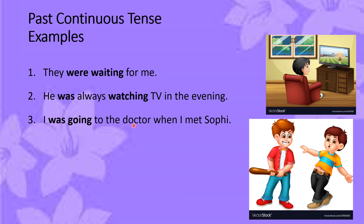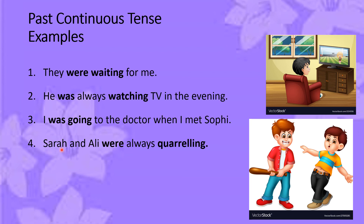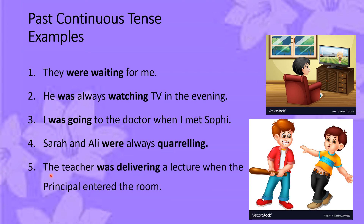This is a clause: 'I was going to the doctor.' Look at the fourth statement: 'Sarah and Ali were always quarrelling.' You are talking about a persistent habit — that they were always quarrelling — so you used past continuous tense. The bold words show the tense. Look at the fifth sentence: 'The teacher was delivering a lecture when the principal entered the room.' Here 'the teacher was delivering a lecture' is the clause, and the past continuous tense has been used to form this clause — 'was delivering' shows that this is past continuous tense.